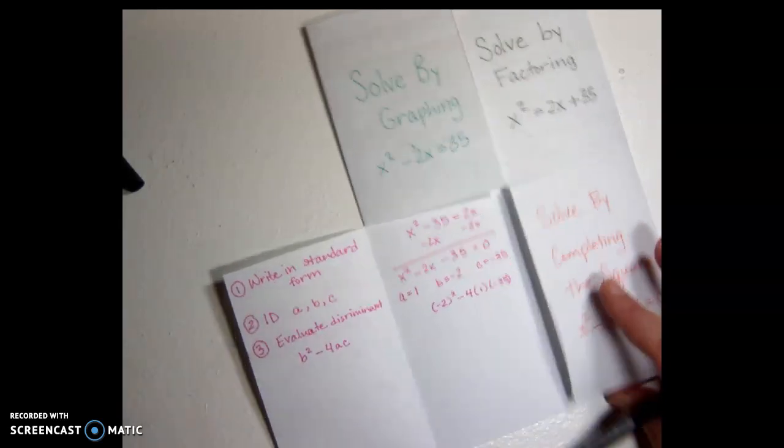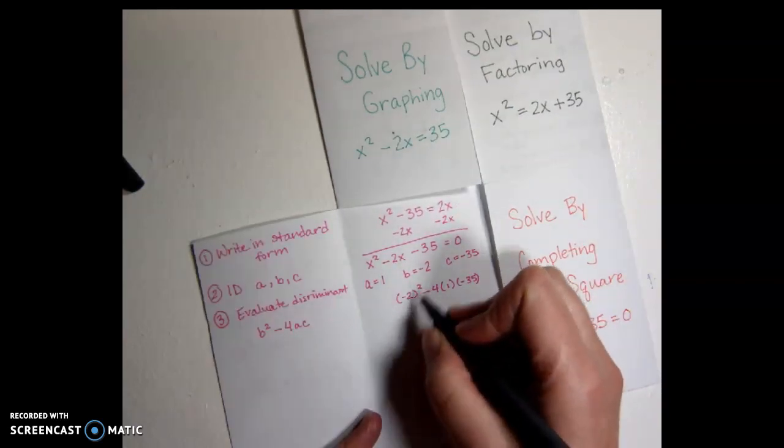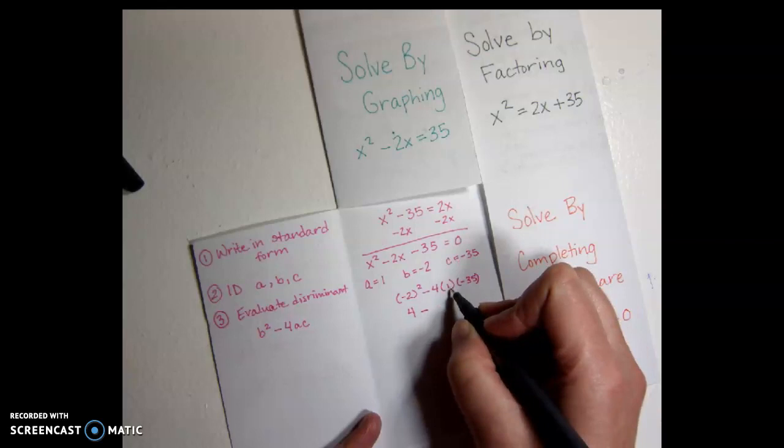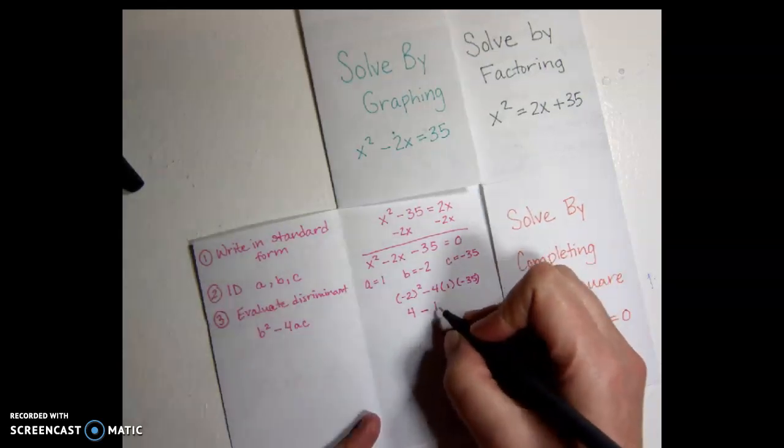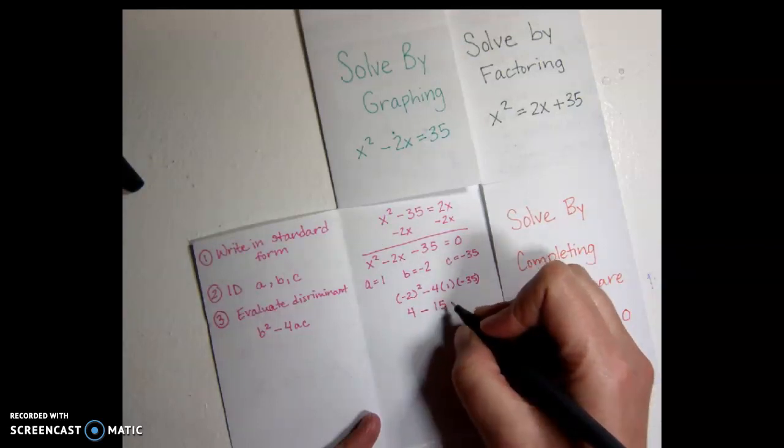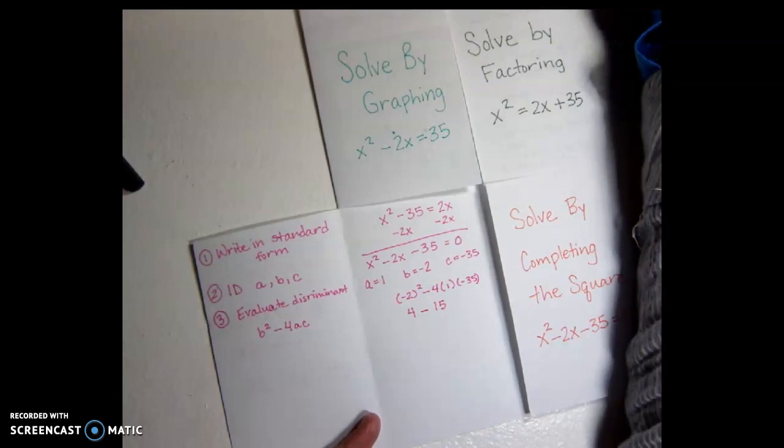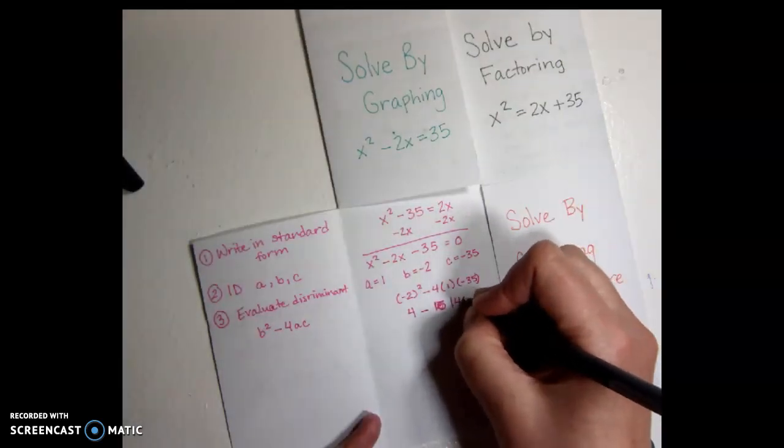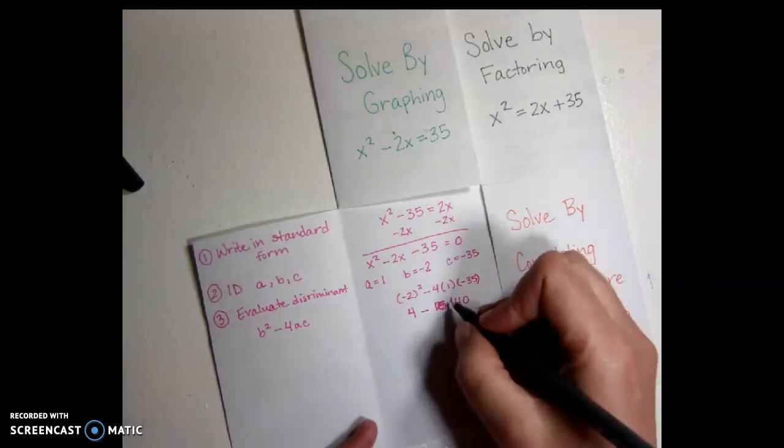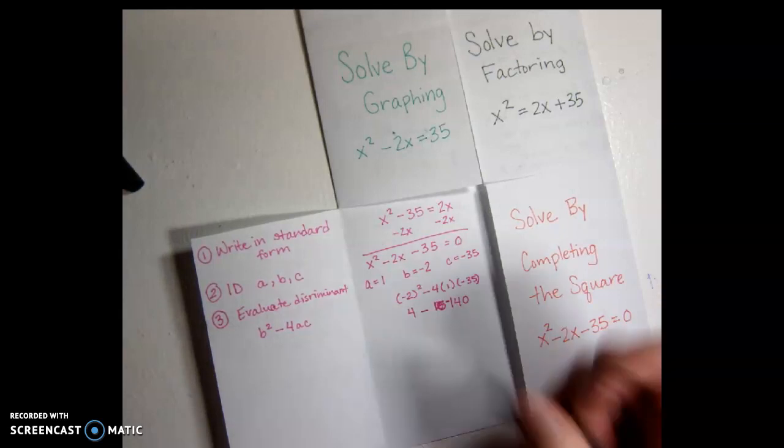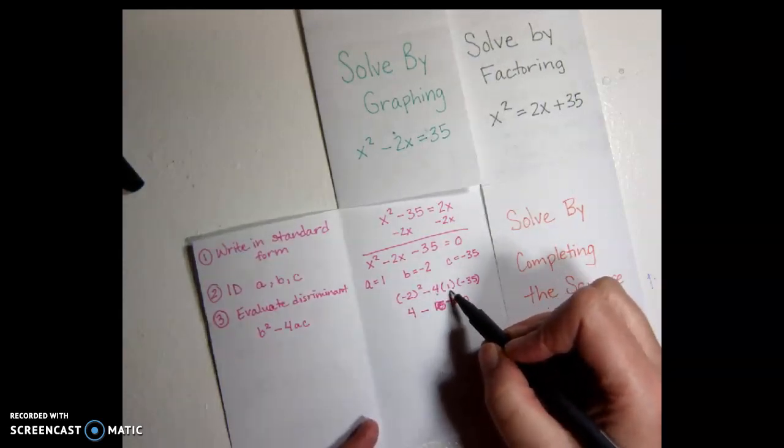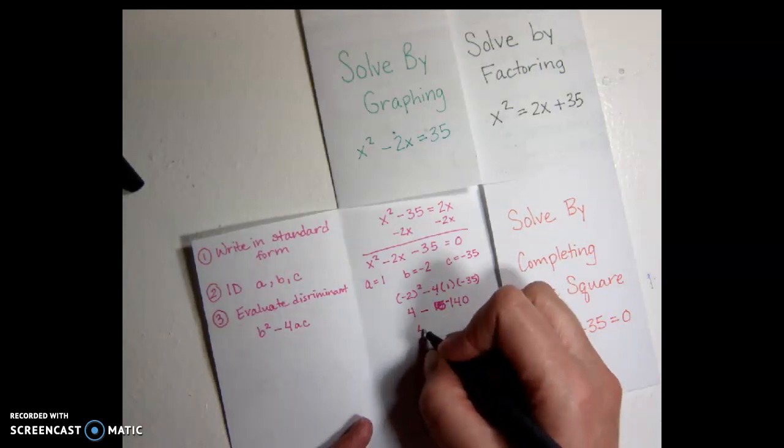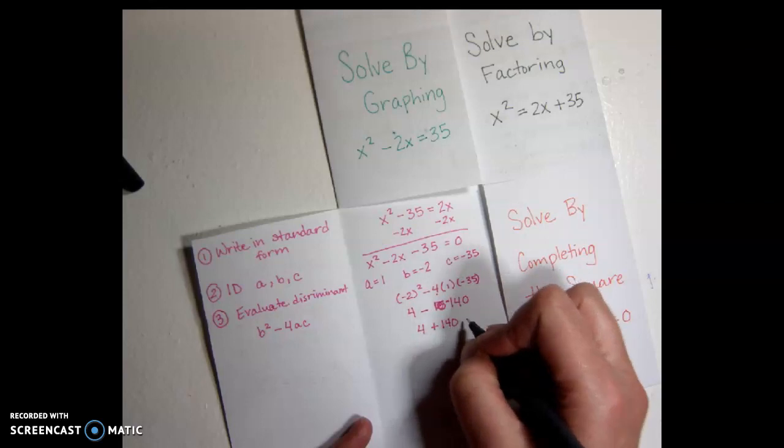Okay, be really careful with order of operations when you're doing this. So b squared would be negative 2 times negative 2, which would be 4. We subtract, but we multiply first, so 4 times 1 would be 4. 4 times negative 35 would be 140. But it would be negative 140 because we're subtracting a positive 4, a positive 1, and a negative 35. Now we're subtracting a negative, so it's going to be plus 140, which is 144.